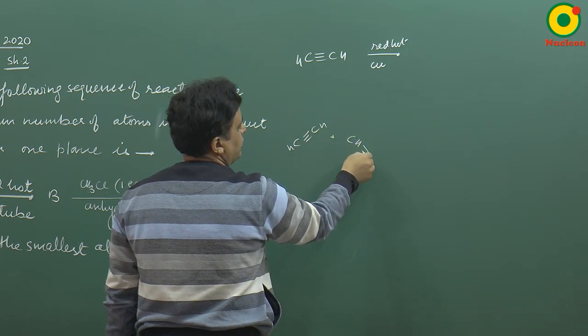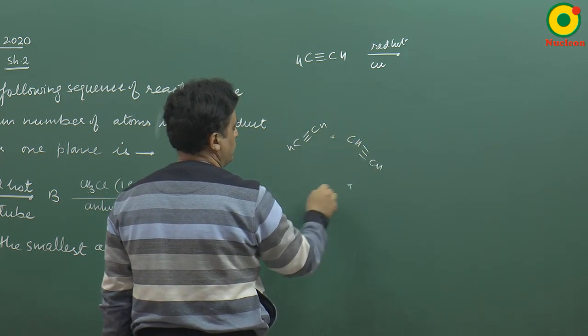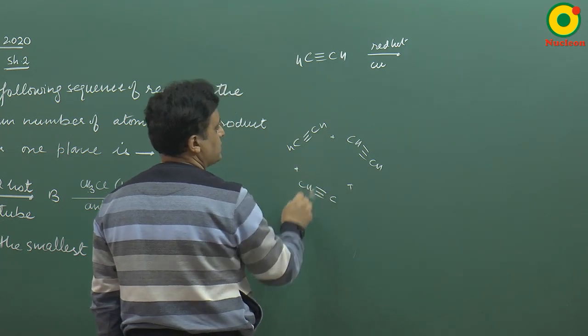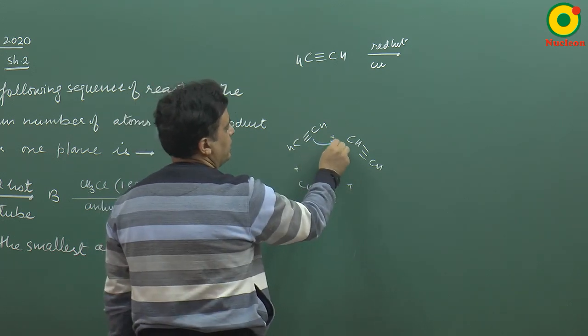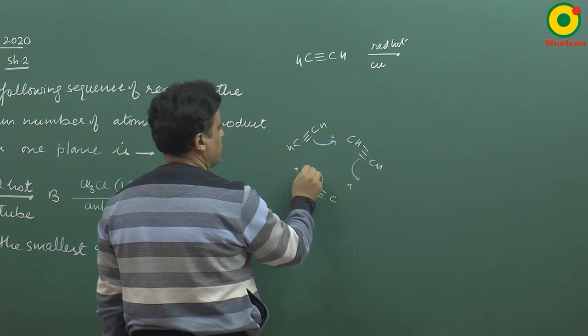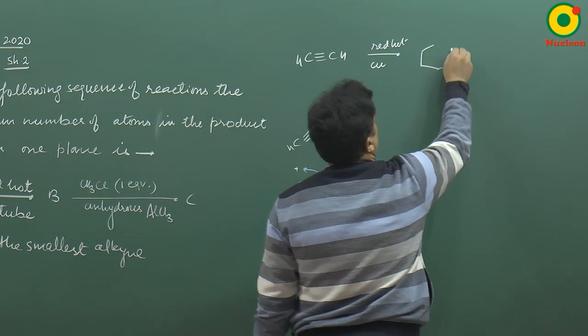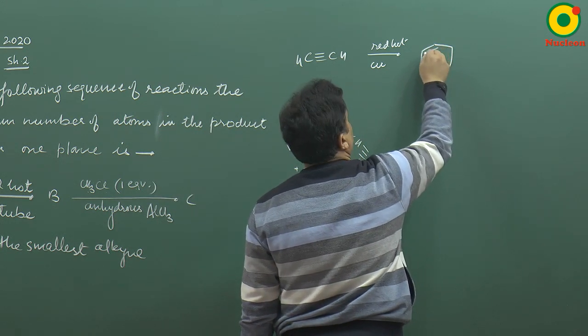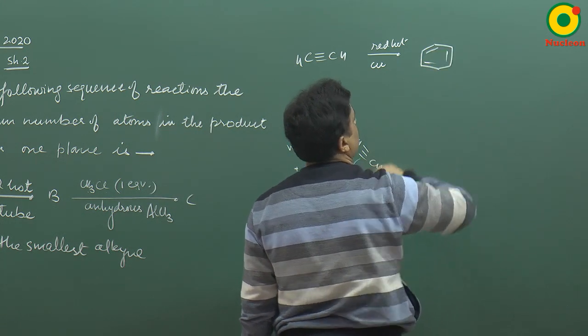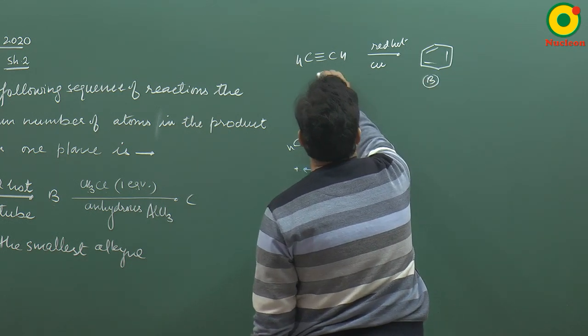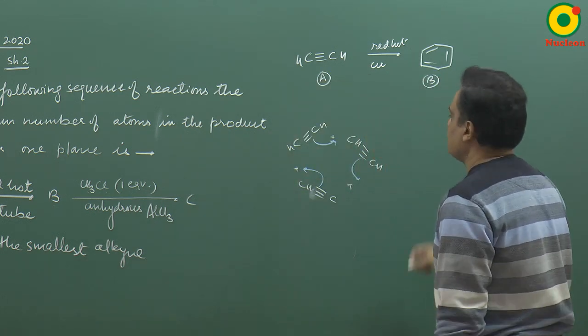Three molecules of acetylene form benzene. This is the product B. This is the smallest alkyne.